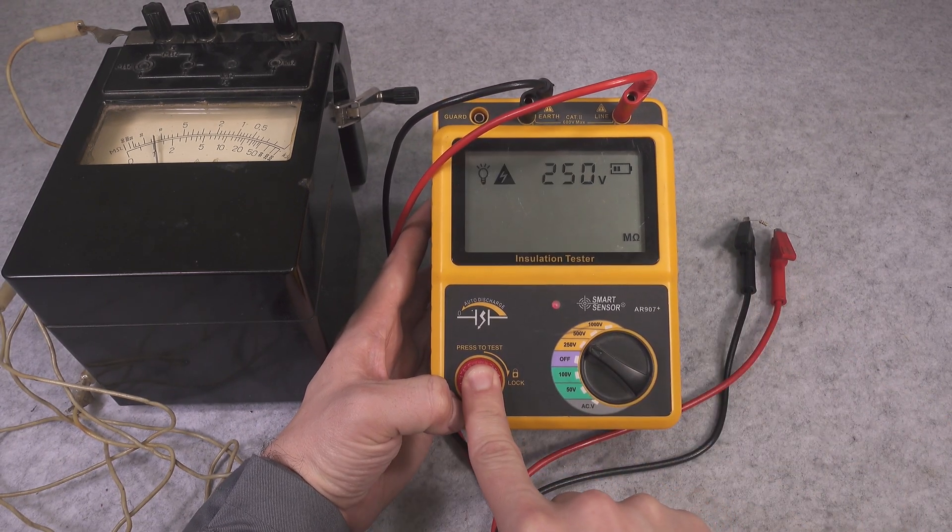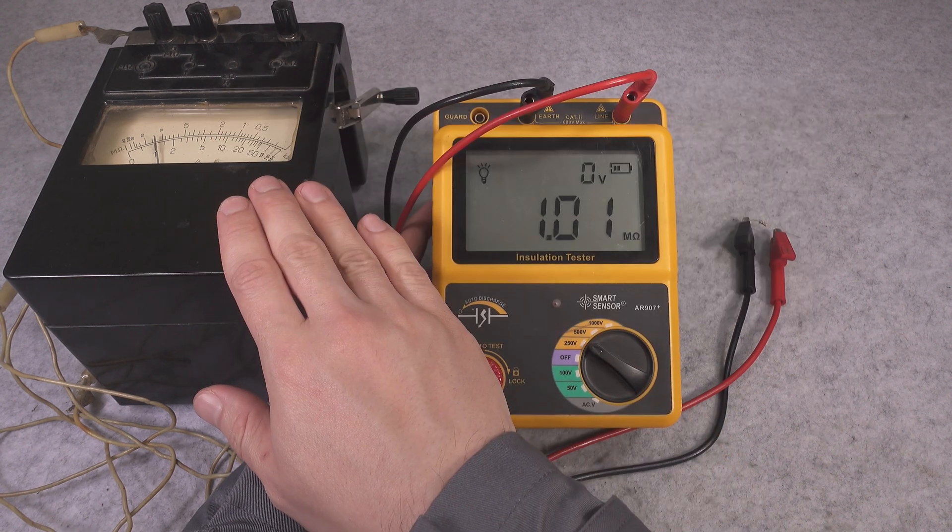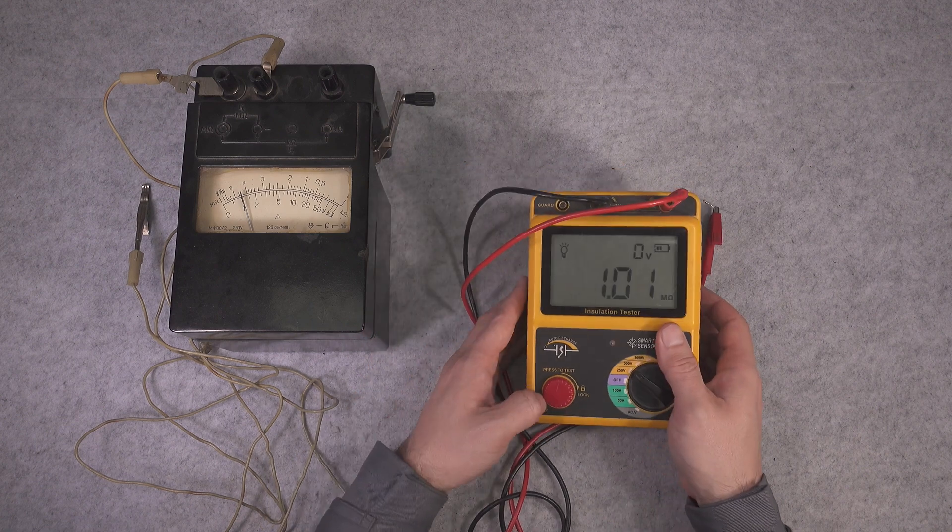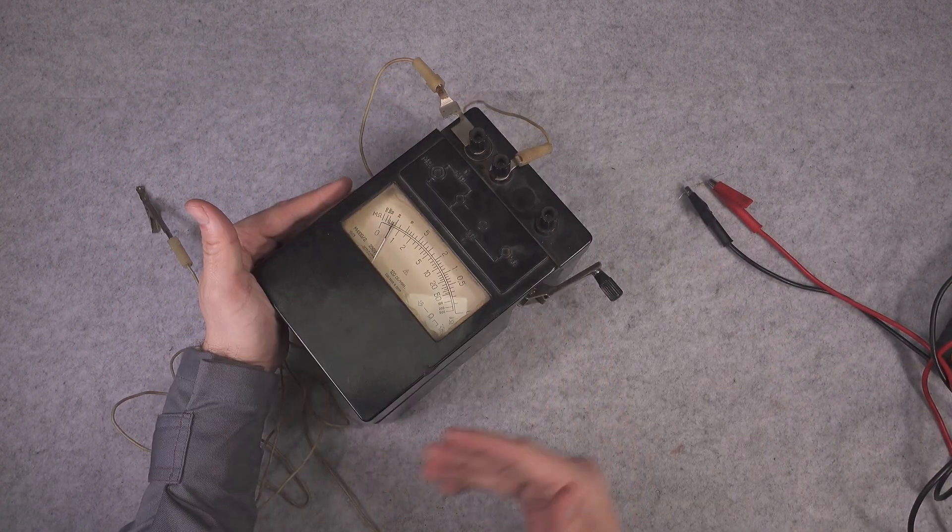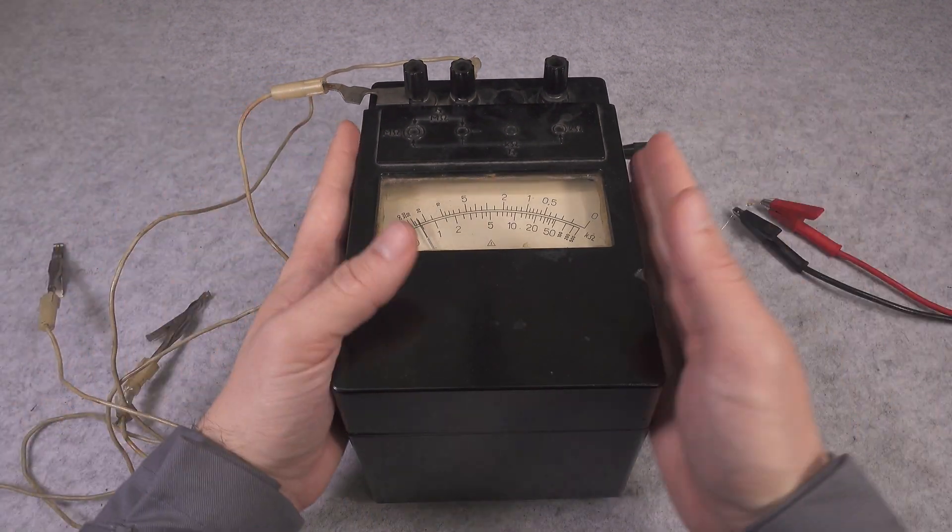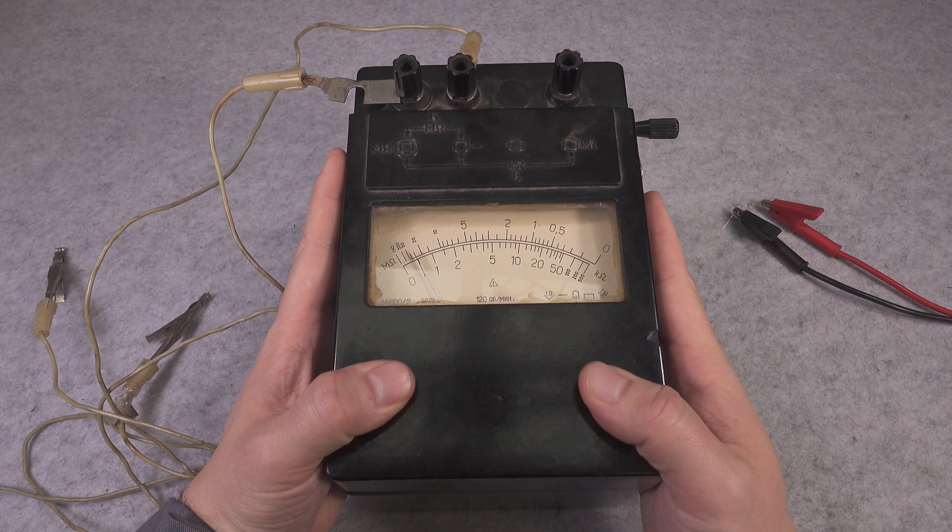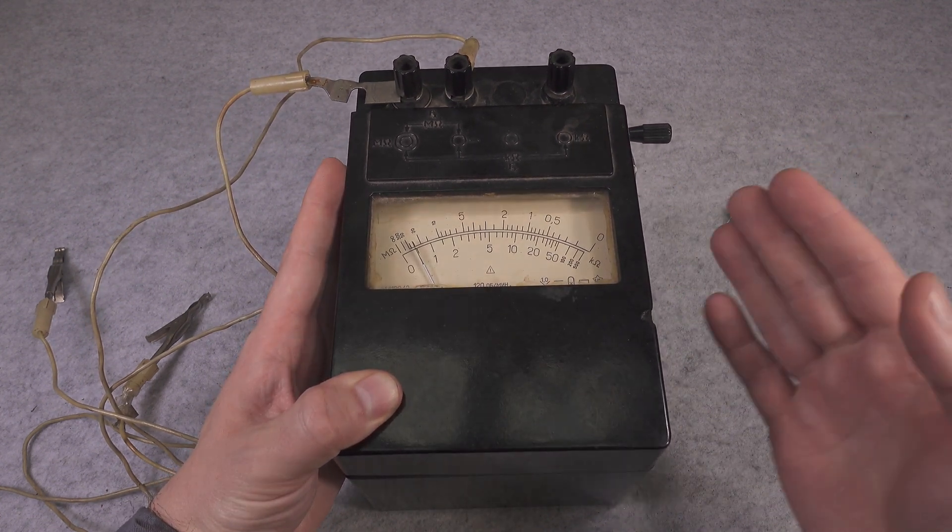So here we are, only 250 volts, resistor is attached. I'm going to press it and we read one mega ohm, exactly like on that device. So this is how you operate your vintage inductor mega ohm meter. Thank you very much for watching. I hope you found that interesting. See you next time and bye-bye.